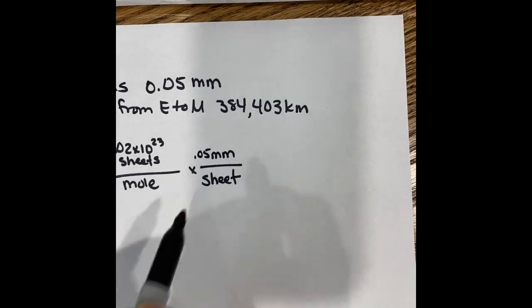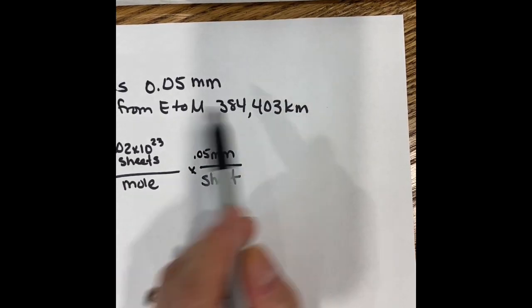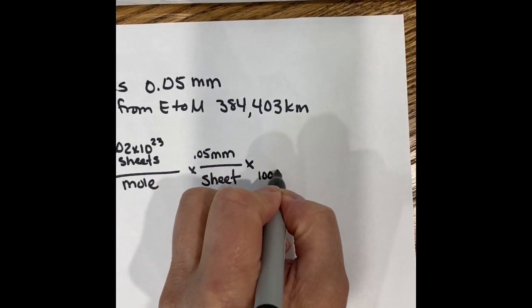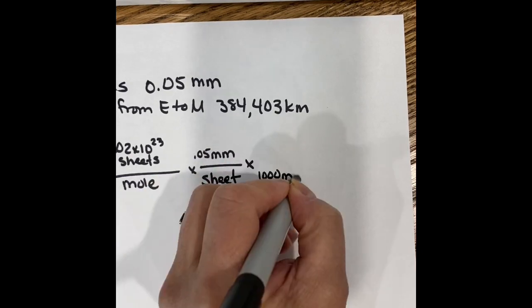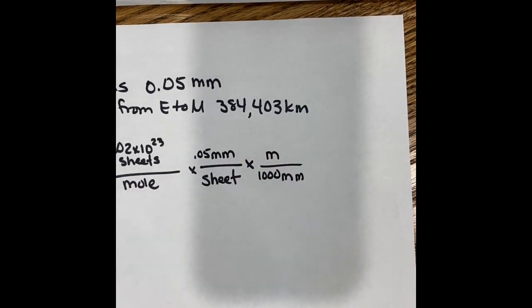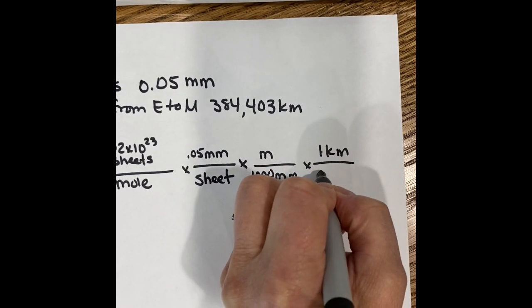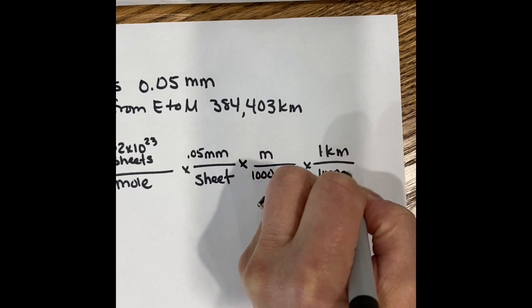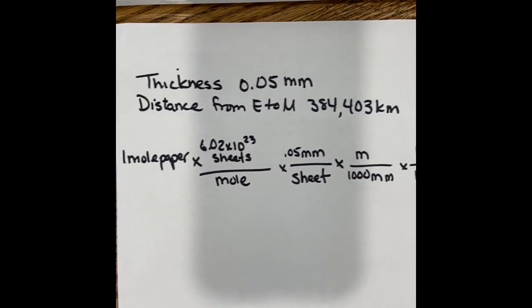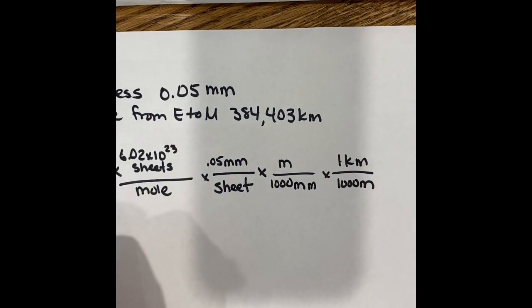I'm going to keep moving over here. So I got to get from millimeters to kilometers because that's what I know the distance from the earth to the moon is. So I know that there's a thousand millimeters per meter. And then I also know that there are a thousand meters per kilometer. So far I have this big, long problem and I got to multiply by one more thing.